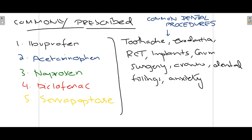Here are the most commonly prescribed painkillers or analgesics in dental treatment: ibuprofen, acetaminophen (also called paracetamol), naproxen, diclofenac — available as diclofenac sodium and diclofenac potassium — and finally serrapeptase. Some of the most commonly performed dental procedures include exodontia, RCT, implants, gum surgeries, crowns, and dental fillings. Sometimes even a patient's anxiety is so high that it prompts the dental surgeon to prescribe painkillers.